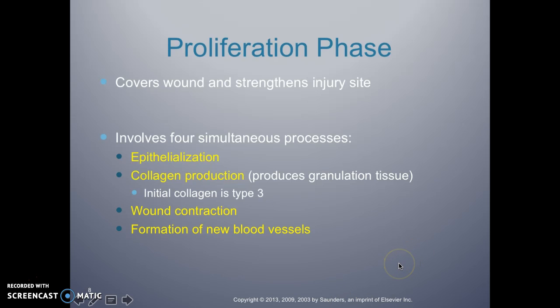The proliferation phase occurs somewhere between day three and about 20 days or three weeks. This is where it covers the wound and strengthens the injury site — four things are happening at the same time: epithelization, collagen production, wound contraction, and formation of new blood vessels. With granulation tissue, it starts as type 3 collagen and then converts to type 1. The wound starts to contract, moving together, and new blood vessels form, which helps the healing process.